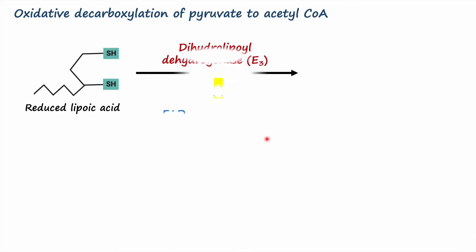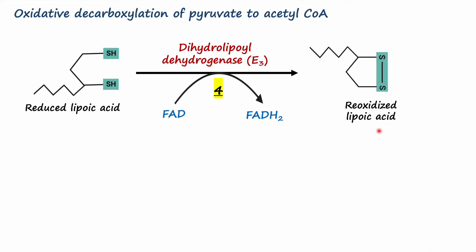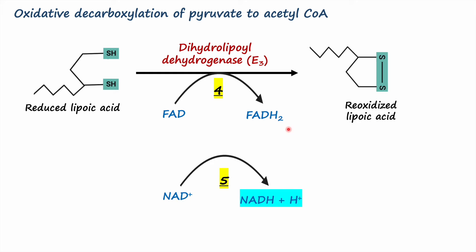Step four is carried out by dihydrolipoyl dehydrogenase E3 enzyme, which is bound to cofactor FAD. In this reaction, the E3 enzyme promotes the transfer of two hydrogen atoms onto FAD, reducing it to FADH2. As a result, the reduced lipoic acid is re-oxidized, and this oxidized lipoic acid is now available for the next set of oxidation reactions.